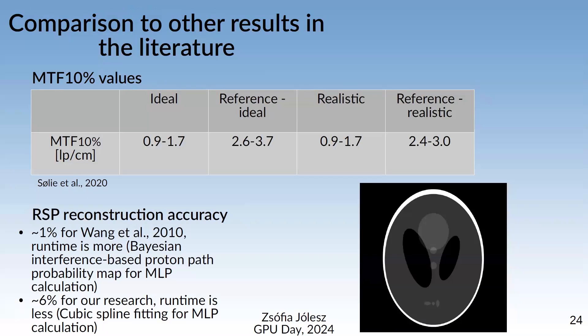Comparing to literature: our MTF 10% values are slightly worse than one reference that used a water tank at five different depths, though they did not report runtime. For RSP accuracy, another article achieved 1% accuracy compared to our 6%; however, they used a Bayesian interference-based proton path probability map for MLP calculations, which they noted is slower than our cubic spline fitting. So we achieved worse accuracy but faster reconstruction.